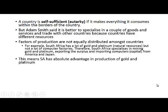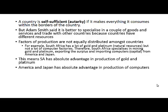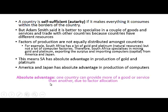This means South Africa has absolute advantage in the production of gold and platinum, while America and Japan have absolute advantage in the production of computers. Absolute advantage means one country can provide more of a good or service than another, due to factor allocation.